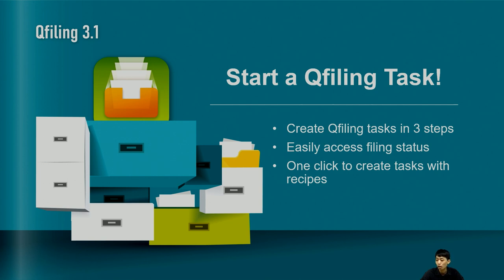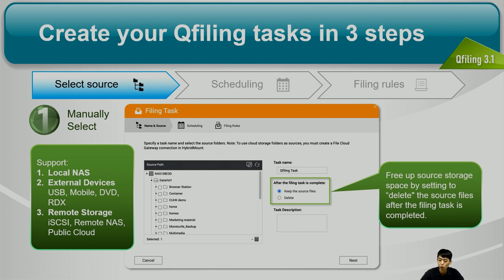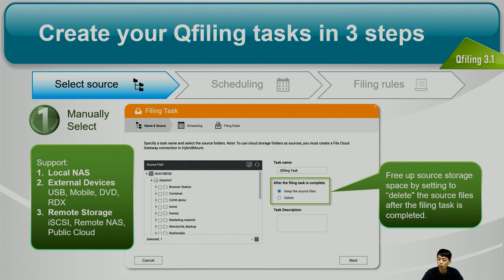Now let's see how to start a QFiling task in three steps. You just need to select a source, set up the scheduling, and set up your filing rule. In selecting the source, you can manually select the folder you want to file — we support local NAS, external device, and remote storage including remote NAS and public cloud. If you want to file from the public cloud or remote NAS, you need to install the Hybrid Mount application. In this step, you also need to select whether you want to keep the source data — like a copy — or delete it after filing — which works like a move.